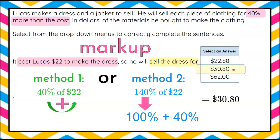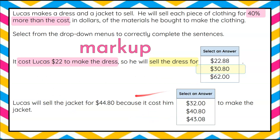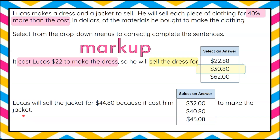Now let's move on to Part 2. Lucas will sell the jacket for $44.80, because it cost him one of these amounts to make the jacket. So now we're doing it in reverse — we know what he sold it for, and we want to know what it cost him. Remember, it was a 40% markup. Pause the video here, solve the second part, then come back and hit play to see my work.